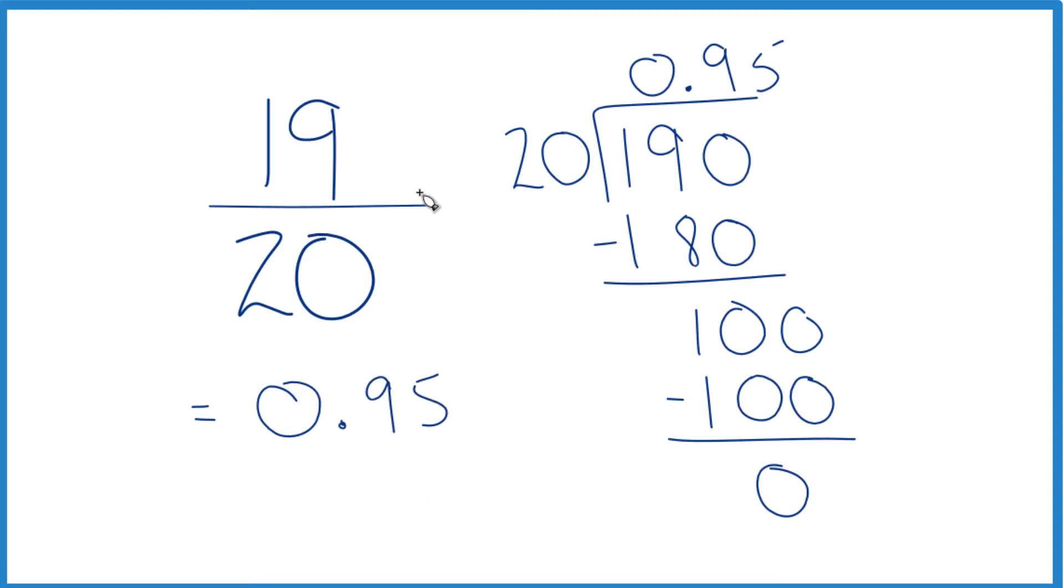That's it. This is Dr. B writing the fraction 19 twentieths as a decimal. The answer, 0.95. Thanks for watching.